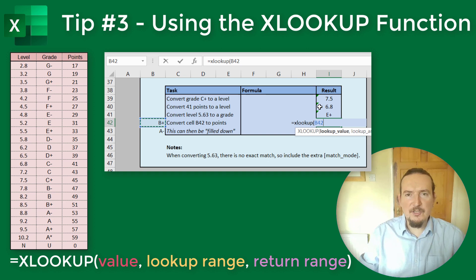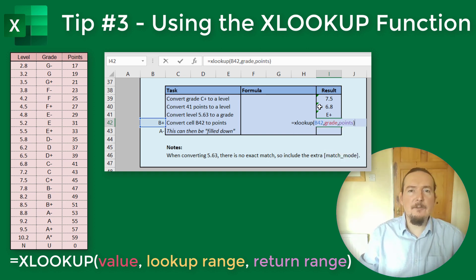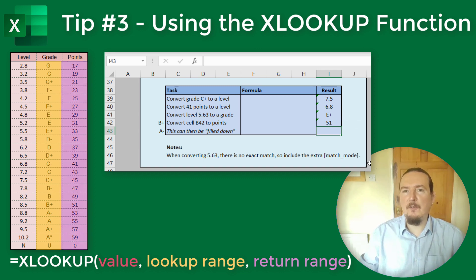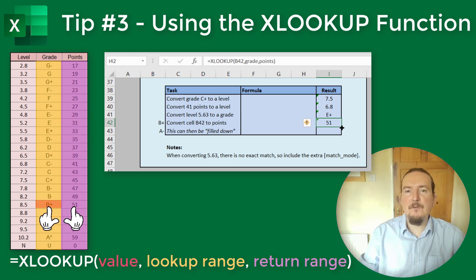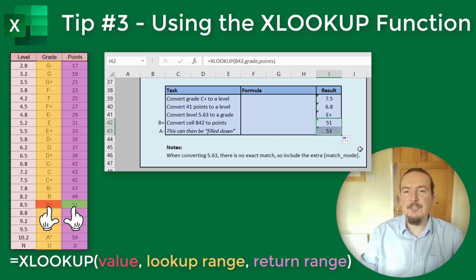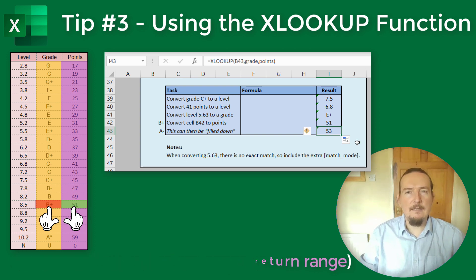Again, we can use the contents of a cell as the lookup value. So here I can write equals XLOOKUP B42 comma grade comma points. And it is really handy to do it this way as you can then do a fill down and apply this formula quickly to a whole column of values — just select it and drag down on the little square on the bottom right of the cell.